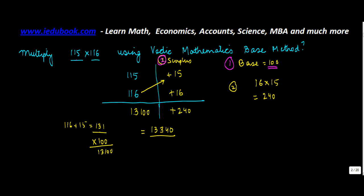Once you get these surpluses, multiply them amongst themselves, so +240 is what you get. Then take either of the numbers and add it onto the surplus of the other. You could have taken 115 and 16 also; the result would have been the same, which gives you 131.